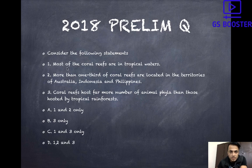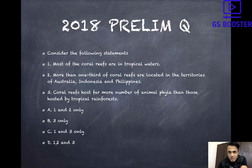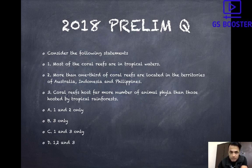In the 2018 prelims, there was a question: consider the following statements. First — most coral reefs are in tropical waters. That is correct, because the ambient temperature of 25 degrees Celsius is found in tropical waters; in temperate areas, temperatures are lower. Second — more than one-third of coral reefs are located in the territories of Australia, Indonesia, and the Philippines. This is also correct — about 40 to 45 percent of coral reefs are in these three countries' waters. Third — coral reefs host far more animal phyla than those hosted by tropical rainforests. This is also correct. So the answer is D — all three statements are correct.